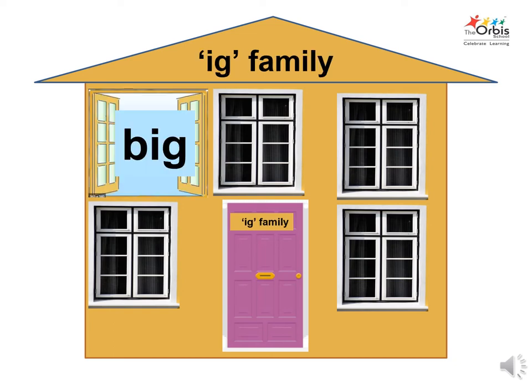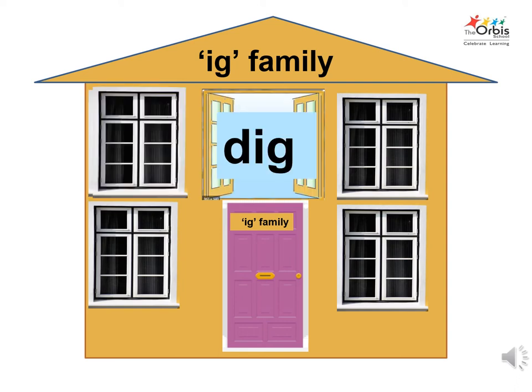Each member has a room with a window. Let's find the names of each family member living in the house. The phonics sound of B is B. To combine the sound of B with the sound Ig to get the name of the person inside the window. Say hello to Big.